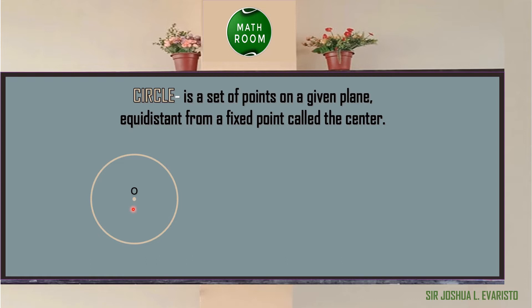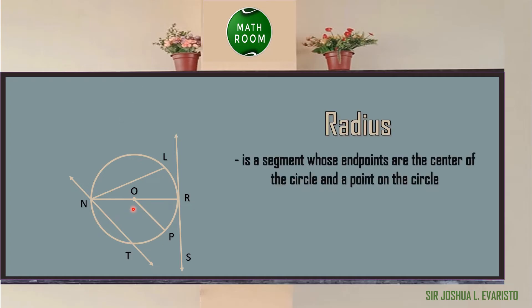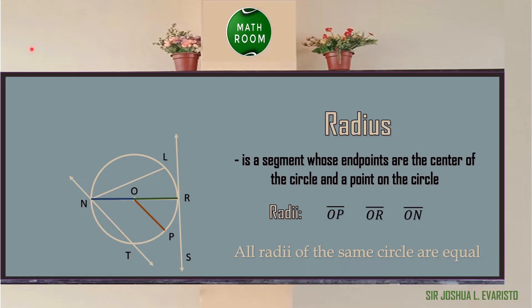After understanding the definition of a circle, we can now move to the different parts of a circle, or the lines related to a circle, starting with the radius. A radius of a circle is a segment whose endpoints are the center of the circle and a point on the circle. On the given circle O, the radii — the plural form of radius — are segment OP, segment OR,